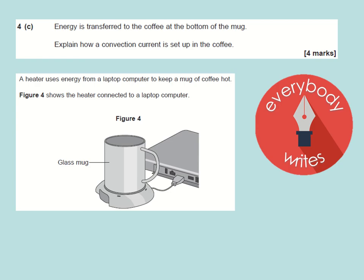So how does it come up in exams? This is a four mark question, so pause the video for up to four minutes and then I'll talk you through the answer. A heater uses energy from a laptop computer to keep a mug of coffee hot. The diagram shows how it's connected to the computer and it told us that energy is transferred at the bottom of the mug and it wants us to explain how a convection current is set up.